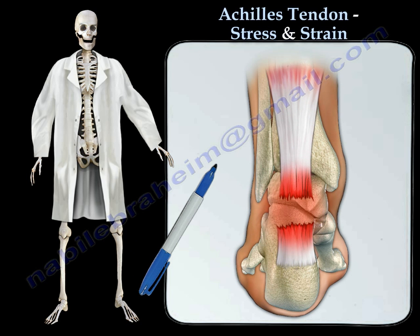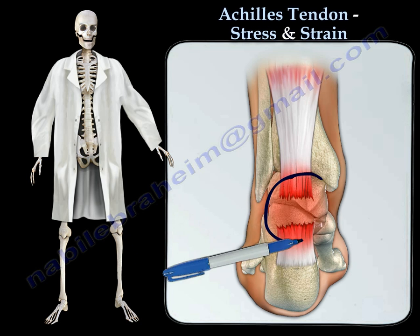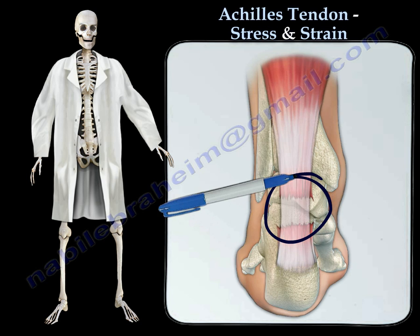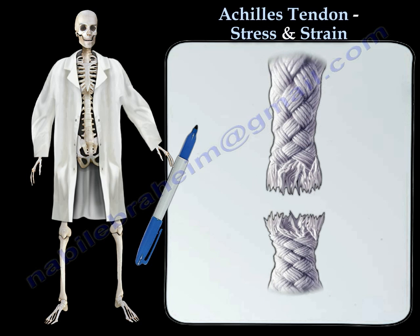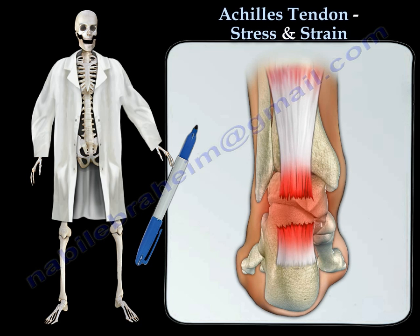When the Achilles tendon ruptures within this narrow area, the result may be similar to pulling apart a rope. This injury is often referred to as the weekend warrior's injury. It typically occurs from overperforming or overdoing a physical activity, and occurs more in men aged 30 to 40 years.